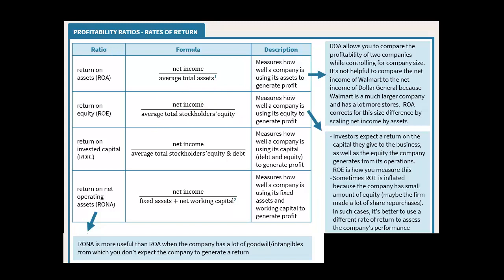Return on equity gives us an idea — we're thinking about equity as capital put up by investors into the company, plus profits that have been earned and reinvested. So it represents shareholders' stake in the business. Taking net income and dividing by that tells you what profit is being generated given the capital invested. ROE can be problematic in some cases — I'll show you a Home Depot example in a minute. Keep in mind this average stockholders' equity is not the market value of the firm.